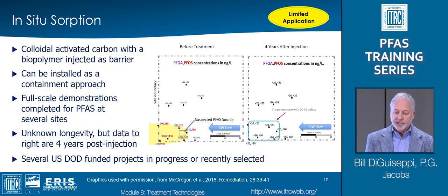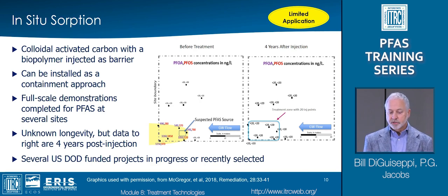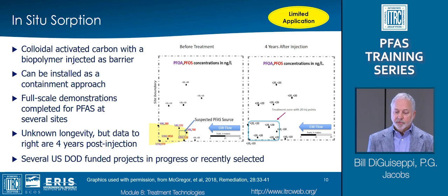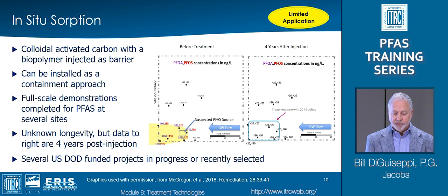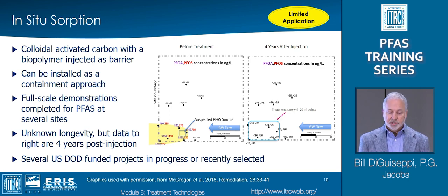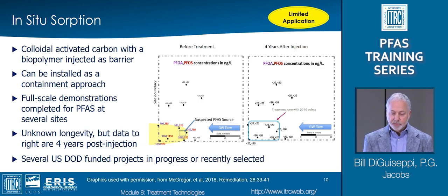Now that we've covered the field-demonstrated water technologies, we'll discuss some limited application technologies for liquids. The first one is in-situ sorption, where colloidal-activated carbon is injected into the aquifer to create a permeable sorptive barrier to contain a plume, similar to a pump-and-treat containment. This approach could be applicable along a property line or to protect a drinking water well or a surface water body. The technology has been widely demonstrated for VOCs, but is limited to a handful of field sites for PFAS. This case study reflects four years of post-injection data, and all the wells in the injection area are still less than 20 nanograms per liter. Because sorption is finite, this approach has the same ultimate breakthrough issues as ex-situ carbon, but additional injections could be performed later if the sorption capacity of the carbon is reached.